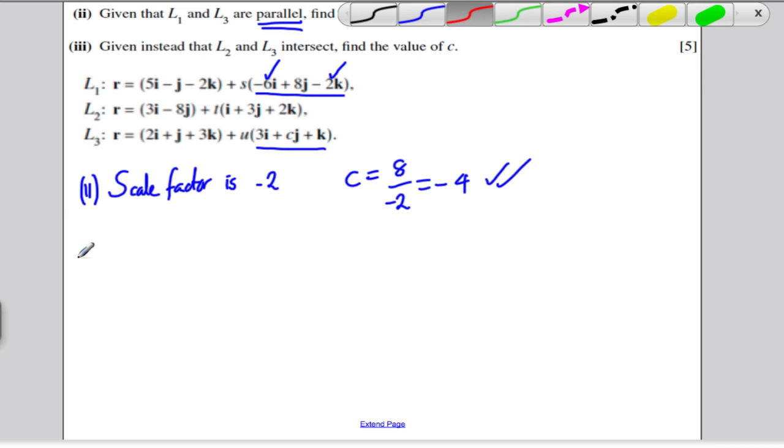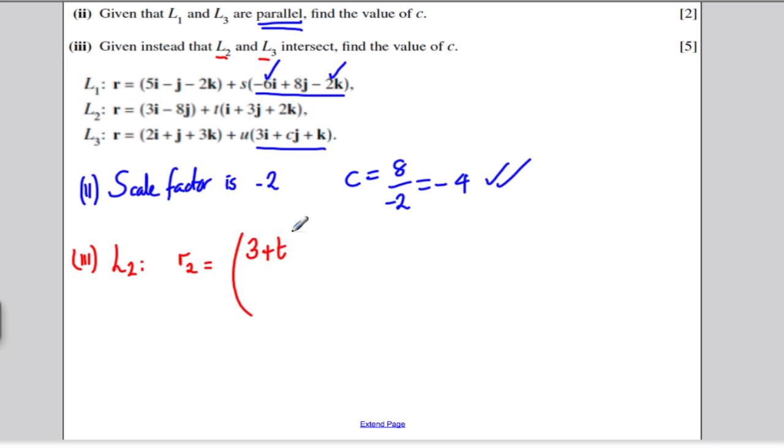Now, for part 3, I'll use a different colour pen. It actually says, forget about what you did in part 2. L2 and L3 and above. L2 and L3 now intersect. Find the value of C. So, if they intersect, the equations of their lines must be equal to each other at some point. So, with regards to L2, I'm just going to tidy up the equation of this line here. I'm going to call that line R2. I'm going to say it was 3I plus TI. So, it's 3 plus TI. How many Js? It's minus 8 plus 3T, J, plus 3T, J, and it's no K plus 2T, K. So, it's 2T, K. I've just written that equation of the line in a more simple format for me. I'm going to do the same with line L3.